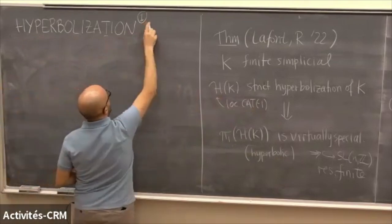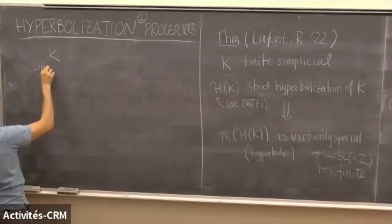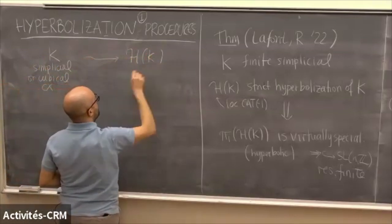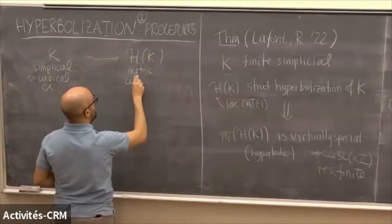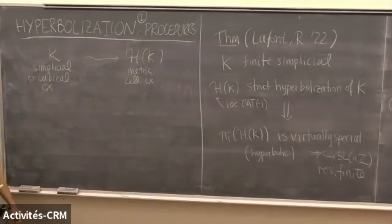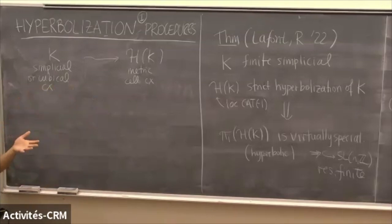There is a class of procedures that go under the name hyperbolization procedures, and they all work in the following way. You start with some combinatorial complex — typically simplicial or cubical — you do something to it, and you obtain a space which is a metric cell complex. You can think of different procedures that do something like that, and we call them hyperbolization procedures if they satisfy the axioms I'm about to write down. There are many different procedures that satisfy those axioms.